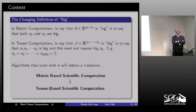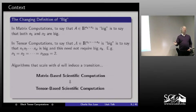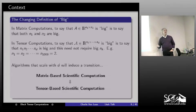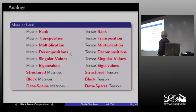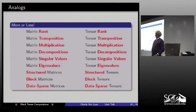I would say we're transitioning from matrix computations to something more complicated with tensors. Matrices come equipped with all different kinds of properties, and for every one of those there is some tensor analog — sometimes more than one, sometimes ambiguous. I want to stress the bottom one: data sparse. We're used to sparse matrices, ones with many zeros, and the idea of data sparsity means I can describe the matrix with many fewer than N-squared numbers — tied to the idea of rank and low-rank approximation.